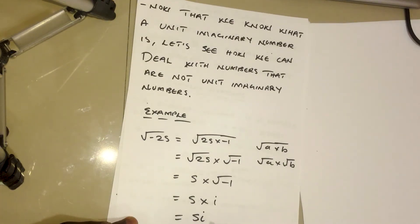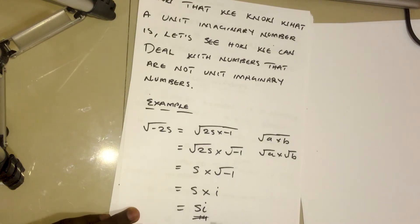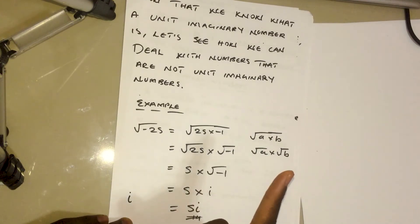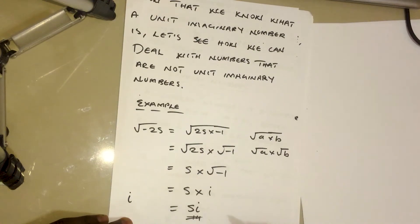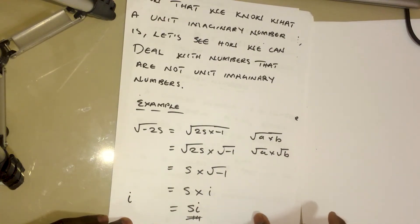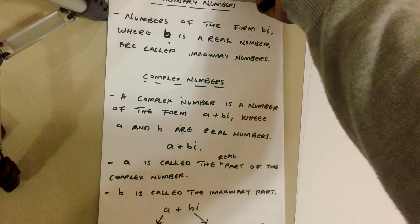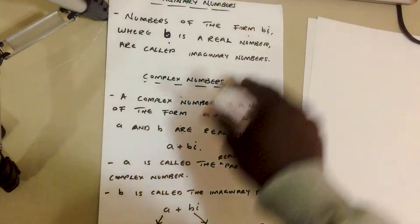What we have right here is what we call an imaginary number. We know that i is a unit imaginary number because it's just one, but 5i is an imaginary number — it's more than one, so it's just called an imaginary number.